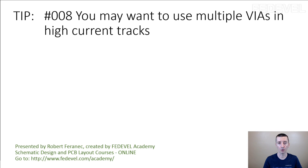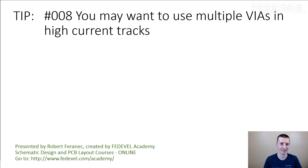Tip number 8. You may want to use multiple vias in high-current tracks. When I was starting with PCB layout, I knew that high-current tracks should be wider than other standard tracks. What I didn't know is that I should probably use more than one via on these kinds of tracks. Why might you want to consider placing more vias on high-current tracks?